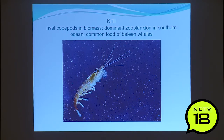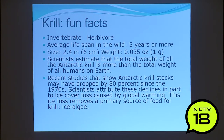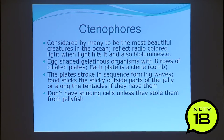Krill are dominant zooplankton in the Southern Ocean and a common food of baleen whales. They're herbivores — the cows of the sea — and can live five or more years, long for a marine creature. The total weight of all Antarctic krill is more than the total weight of all humans on earth. Krill stocks have dropped by about 80 percent since the 1970s, likely due to declined ice cover — ice loss removes ice algae, which is a primary food source for krill.